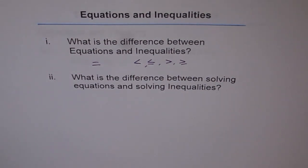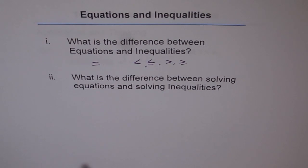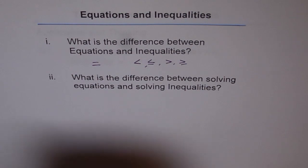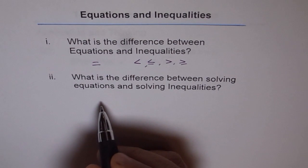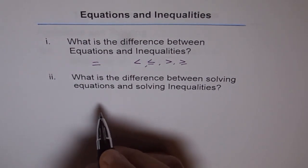The second part is, what is the difference between solving equations and solving inequalities? Well, for the most part, the same principles and rules are followed for solving both equations and inequalities. However, there is one major difference. You cannot multiply or divide by a negative number on both sides of an inequality without adjustment. In case of an equation, you can multiply or divide by the same number on both sides, whether it is negative or positive — there is no difference.